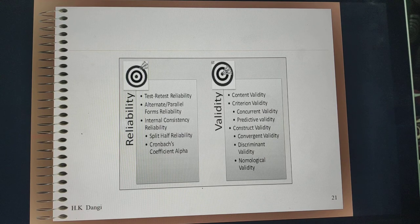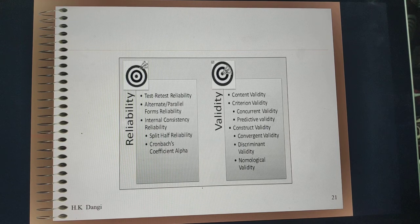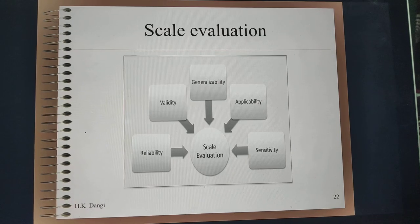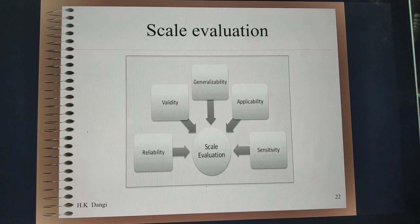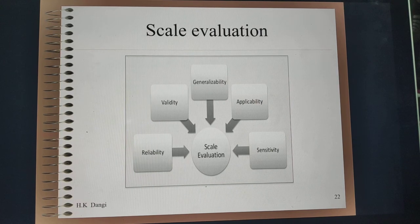Cronbach's Alpha is a very popular measure of reliability. Similarly, validity could be content validity, criterion validity, concurrent validity, or construct validity. Construct validity can be further divided into convergent validity, discriminant validity, and nomological validity. To check whether your scale is performing as it should, you can assess it with the help of reliability, validity, generalizability, applicability, and sensitivity of the scale.